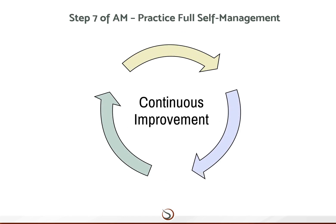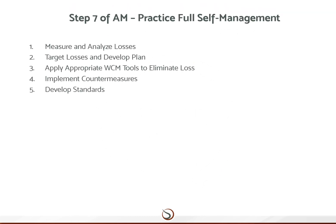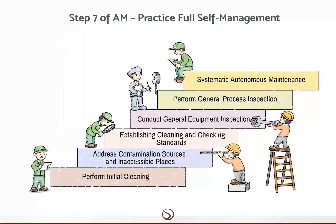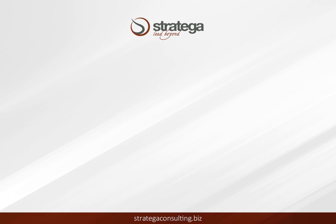In step seven, the drive is to create full autonomous management by the team, aimed at continuous improvement. The defined method for the approach is: measure and analyze losses; target losses and develop plan; apply appropriate WCM tools to eliminate loss; implement countermeasures; develop standards. The ultimate goal of these steps is a robust organization capable of full self-management.